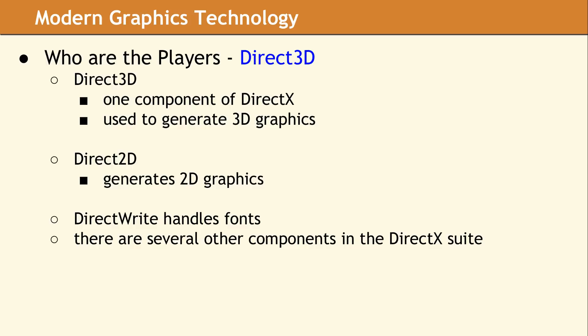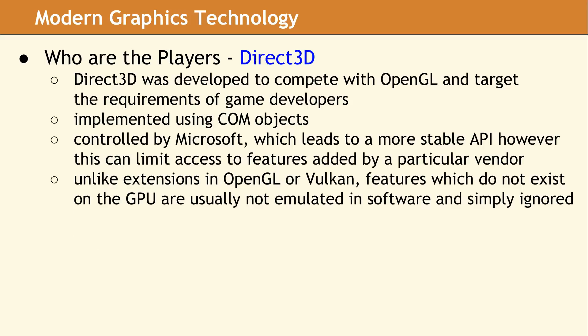Microsoft knew that without good support for gaming, it would be difficult to convince users to migrate to Windows 95. DirectX is an interface which is only supported on Windows, so it does not have to deal with the complexity of being cross-platform. There are also no extensions provided in DirectX, so a programmer can use the entire API and assume all features will be present. On the other hand, this means that hardware features sometimes take longer to be available in DirectX. There is typically no software emulation for missing features, so commands that the current GPU does not support are typically ignored, and the quality of the output can be degraded while the performance will remain high.